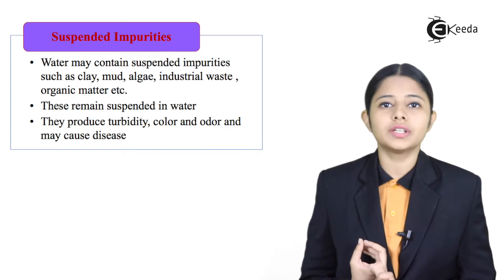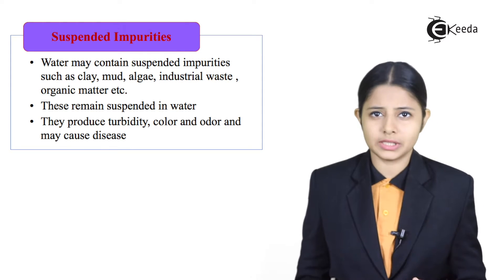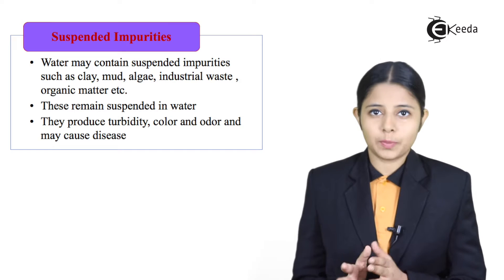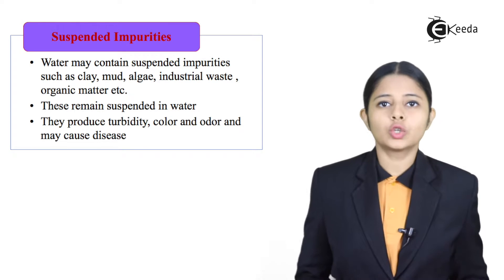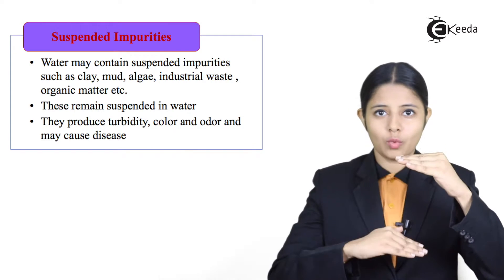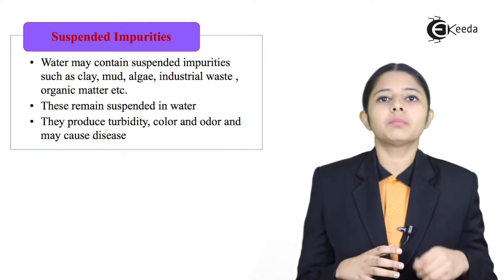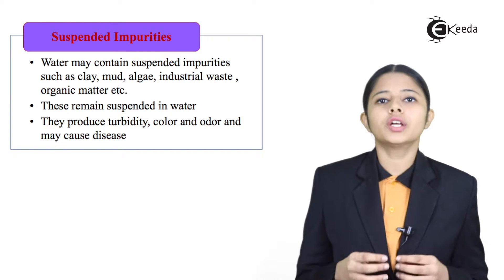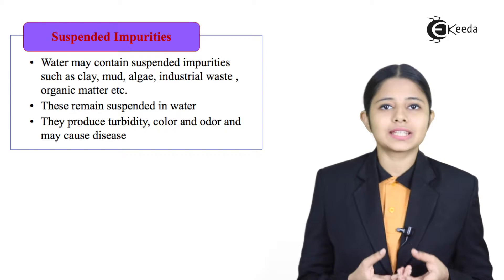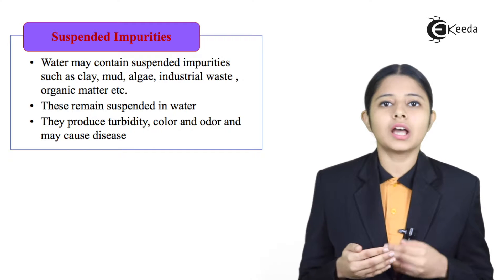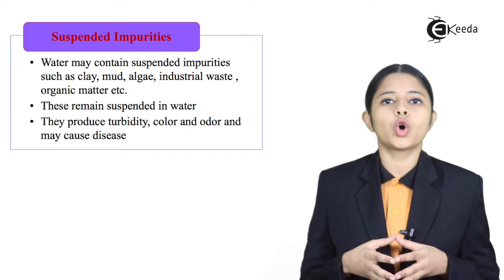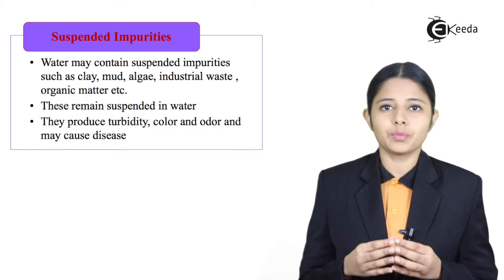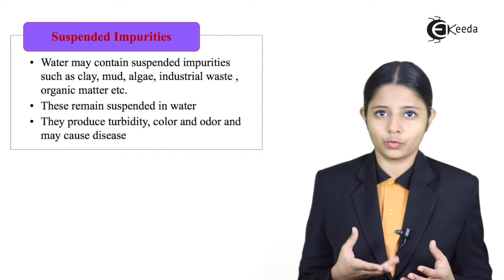These impurities change the turbidity of the water. Turbidity is exactly opposite of transparency — through turbid water we cannot see clearly; it becomes muddy and marshy. It also changes the odor and the color of the water. So these are impurities which are a little difficult to remove.